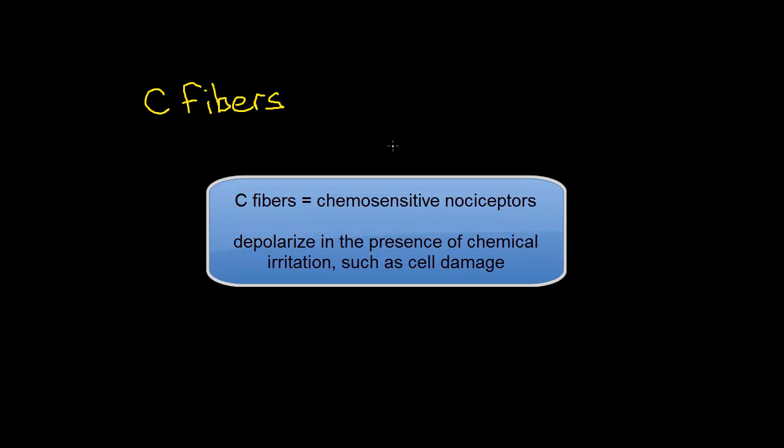These chemosensitive nociceptors are the most numerous sensory receptor in the body. It is also the most numerous sensory receptor of the spine. These are in comparison to the A fibers, and the A fibers are the large myelinated nociceptors.